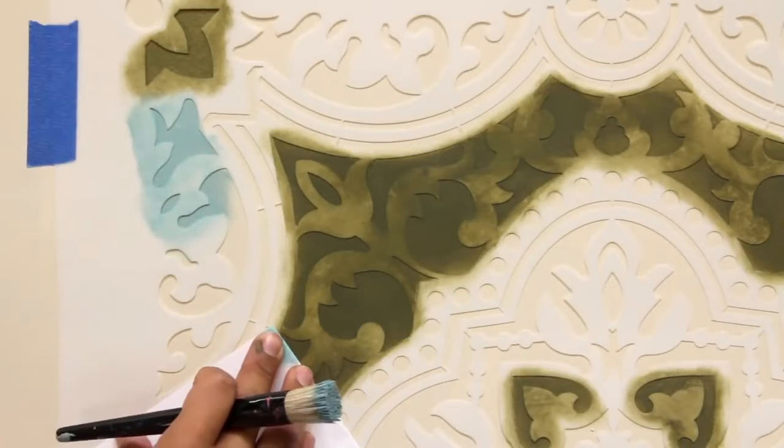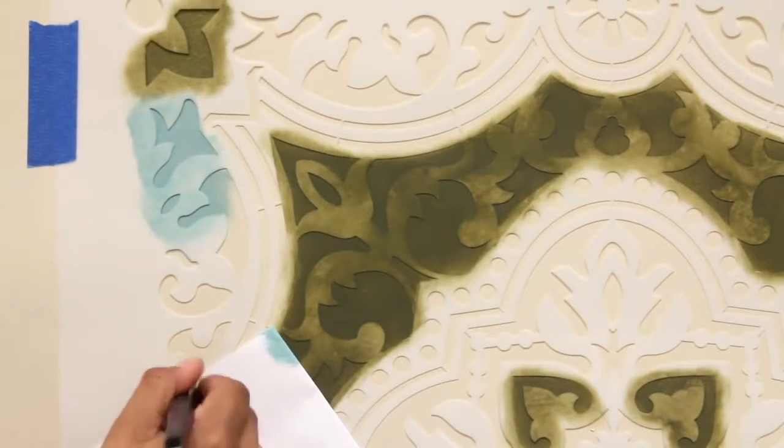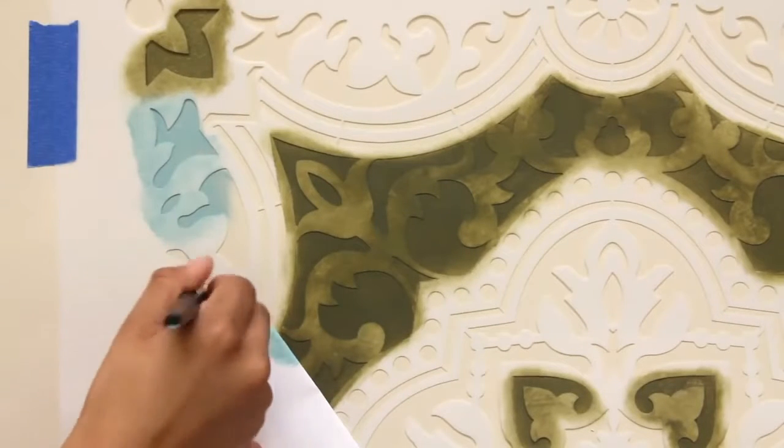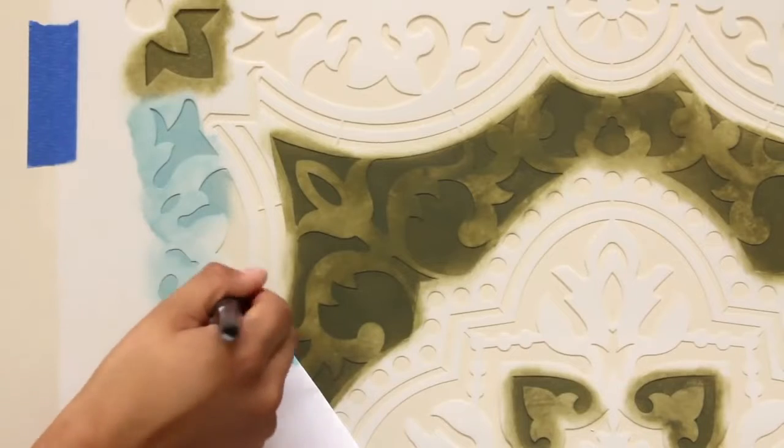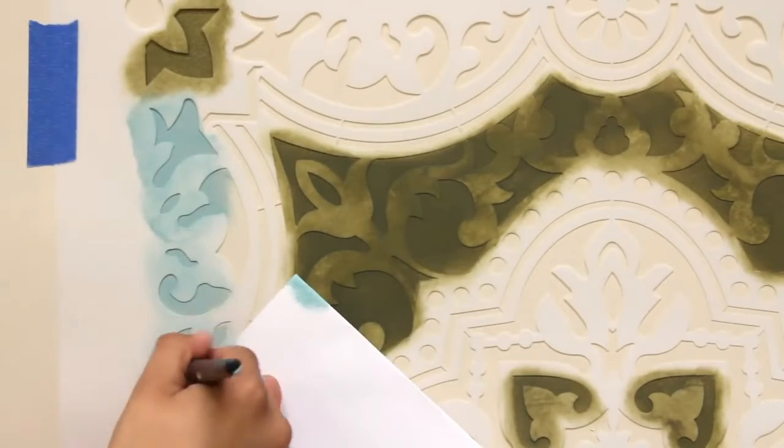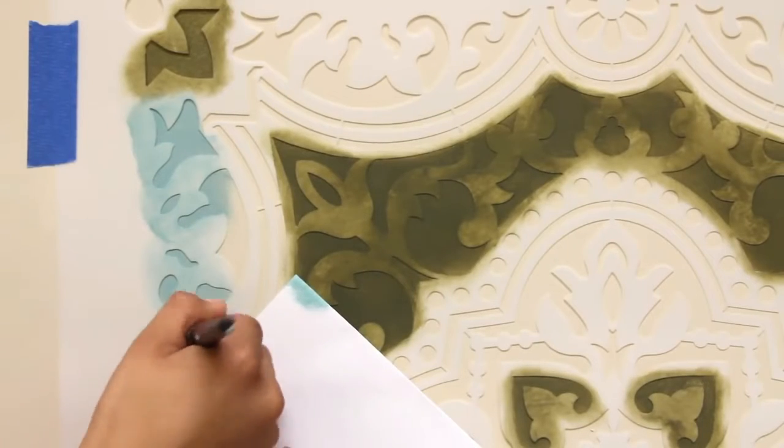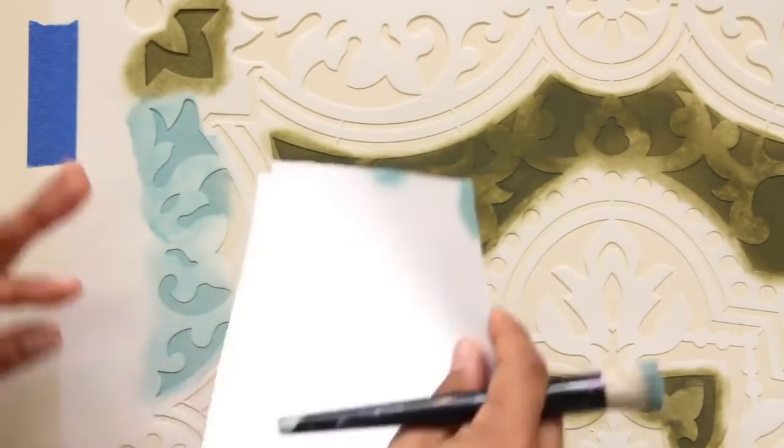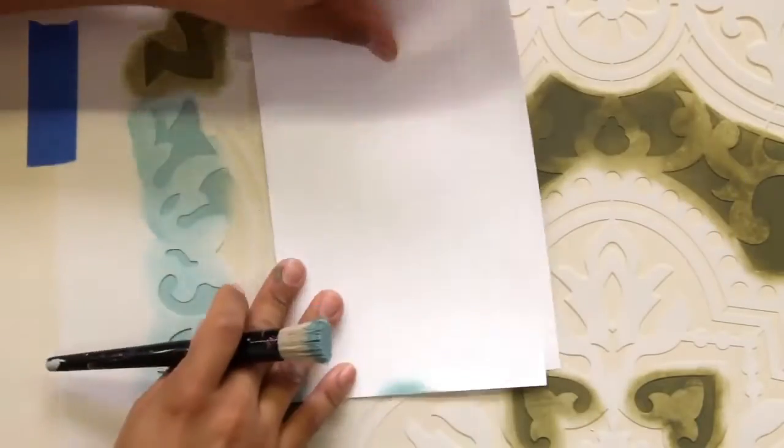You can use tape, but we find it easier to simply use a piece of paper to temporarily protect the open areas. Fold a sheet of paper down, or use a post-it note and place it over the elements you want to protect. Use one hand to stencil, and the other hand to hold the piece of paper in place.